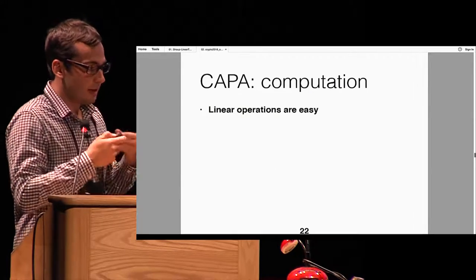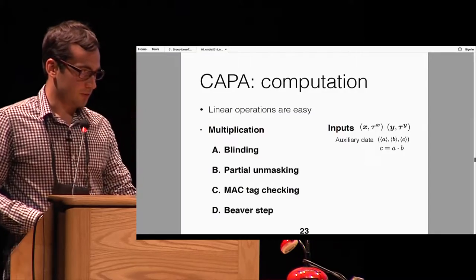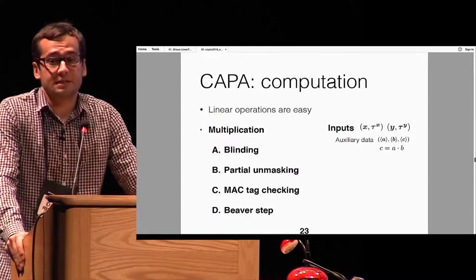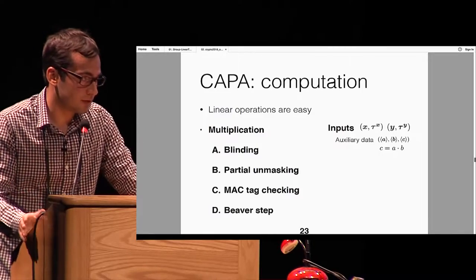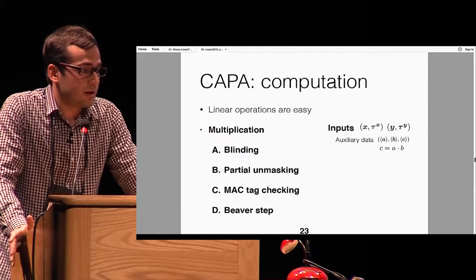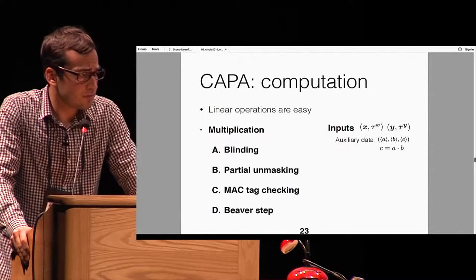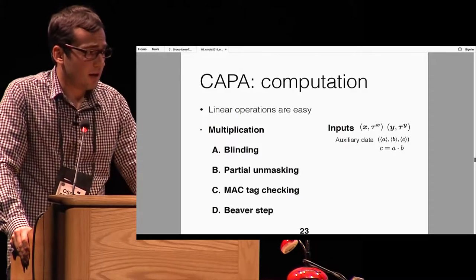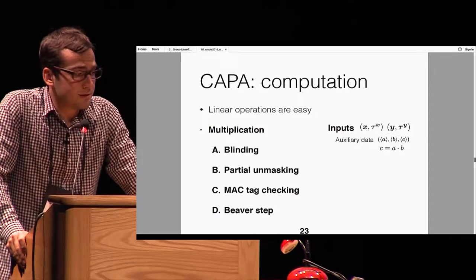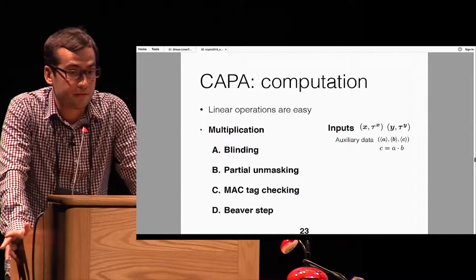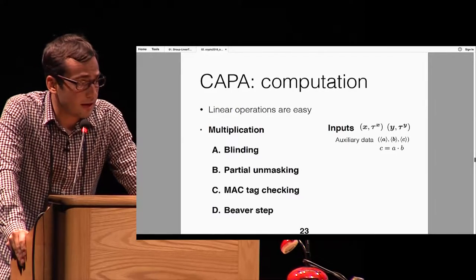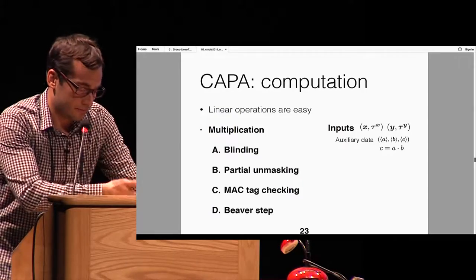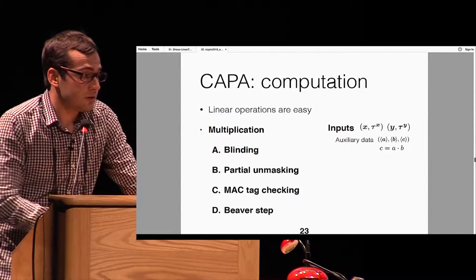Linear operations are very easy because this splitting is amenable to any linear operation such as addition or multiplication by a public constant. For non-linear operations, let's explain multiplication. To multiply X times Y, we are given shares of X and shares of the tag of X, similarly for Y, and we are also given an auxiliary Beaver triplet: the sharing of three values A, B, and C, where A and B are random values shared as described, and C equals A times B.